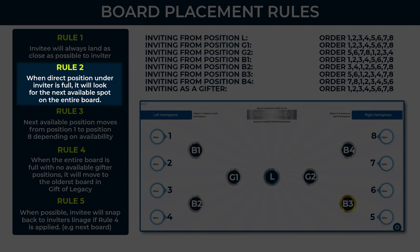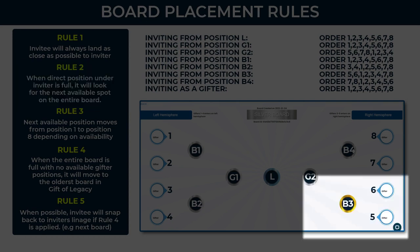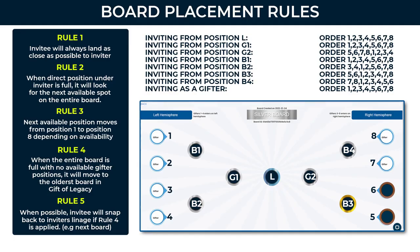Rule number 2: when the direct position under the inviter is full, it will look for the next available spot on the entire board. For example, if position B3 invites to position number 5 and the next one follows to position number 6, there is no more space under B3 for a gifter. So the gifter will go to the next available spot on the entire board, starting to populate from position 1, then 2, 3, 4, and so on.